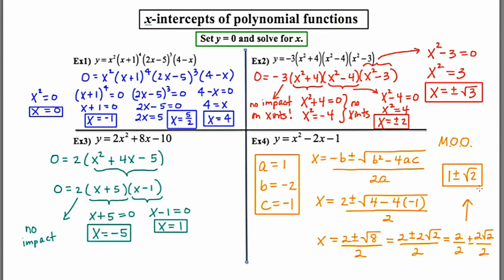So that's how you find x-intercepts of polynomials. You simply let y equal to zero, factor if you need to, and then set each factor equal to zero. It's that simple.